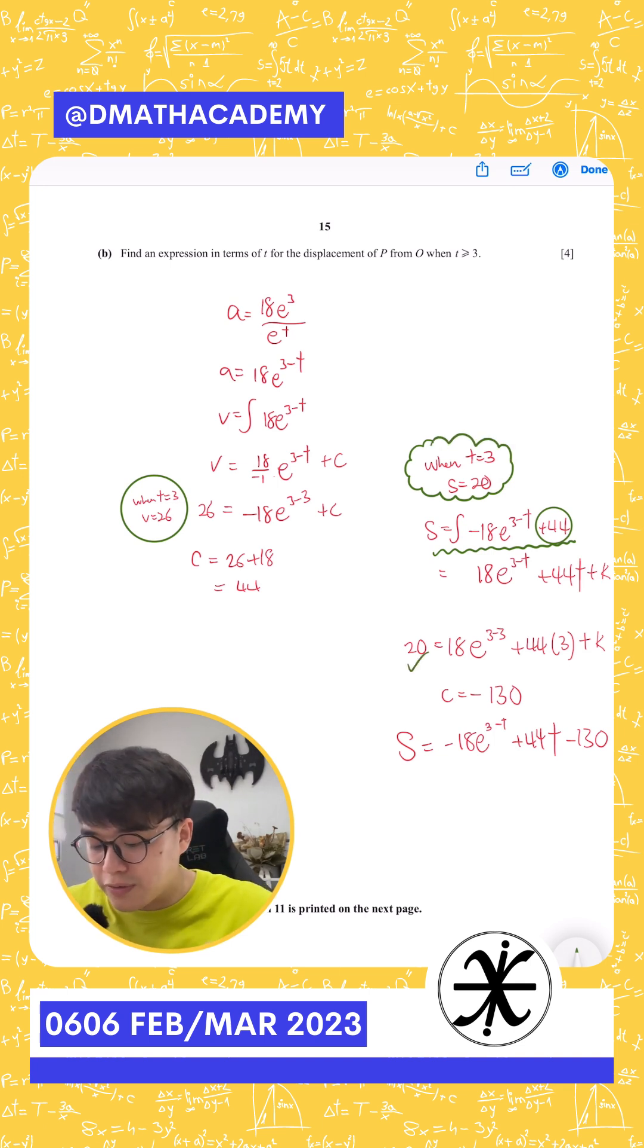So substitute that in, you'll find your next constant here is negative 130. So this is how you solve this question. Feel free to pause the video, go through it again, and ask me if you have any other questions.